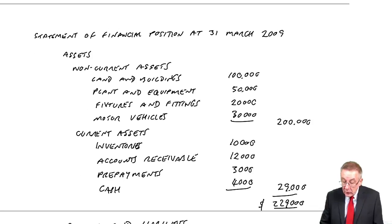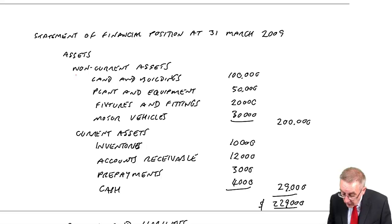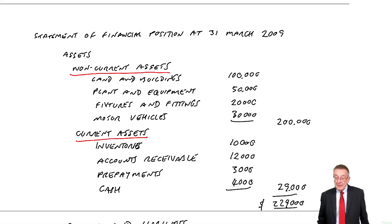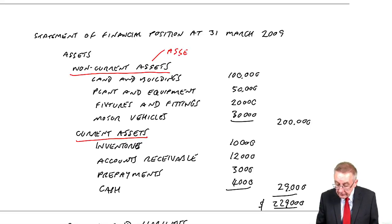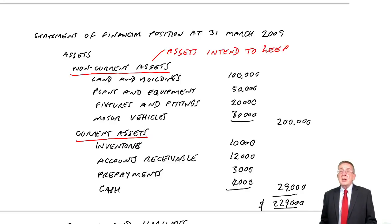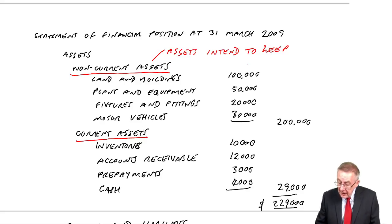In a bit more detail, first of all the assets — listing everything we own — they have to be split under two headings: what we call non-current assets and what we call current assets. Non-current assets are assets we intend to keep. Although there's no precise rule here, it's generally assets we intend to keep for more than a year.